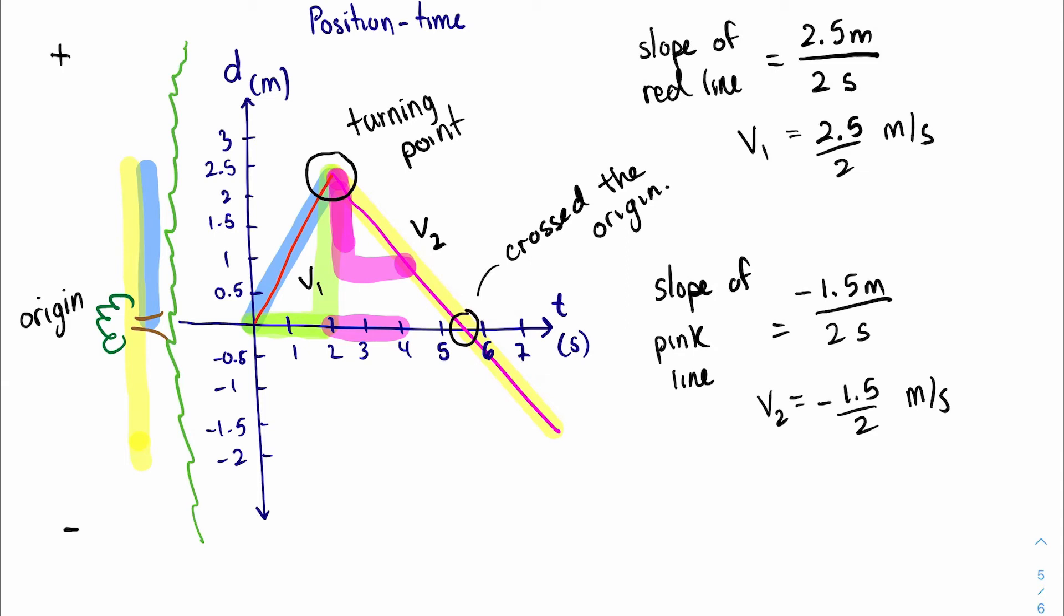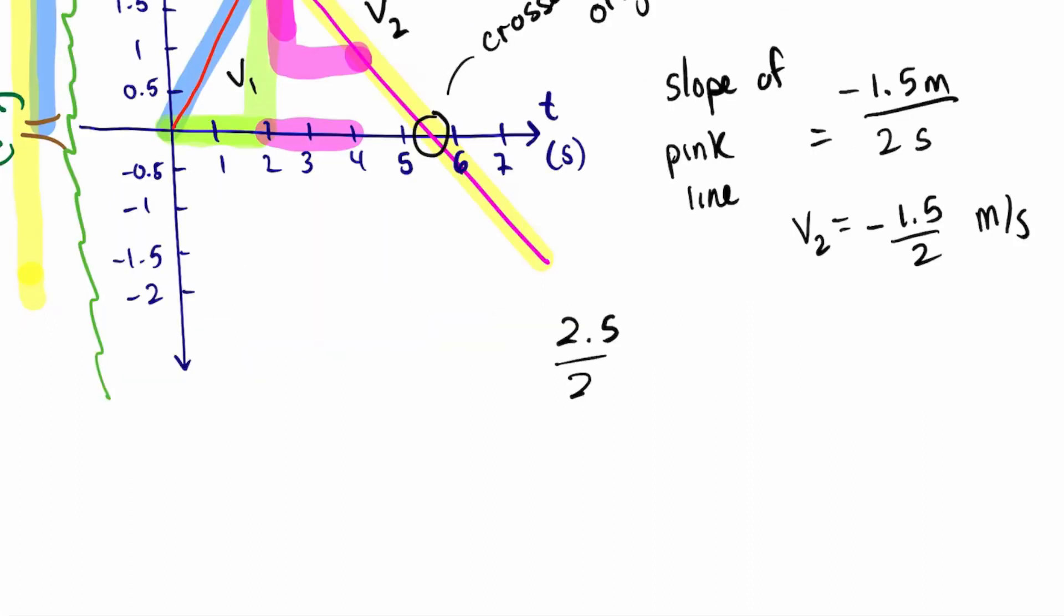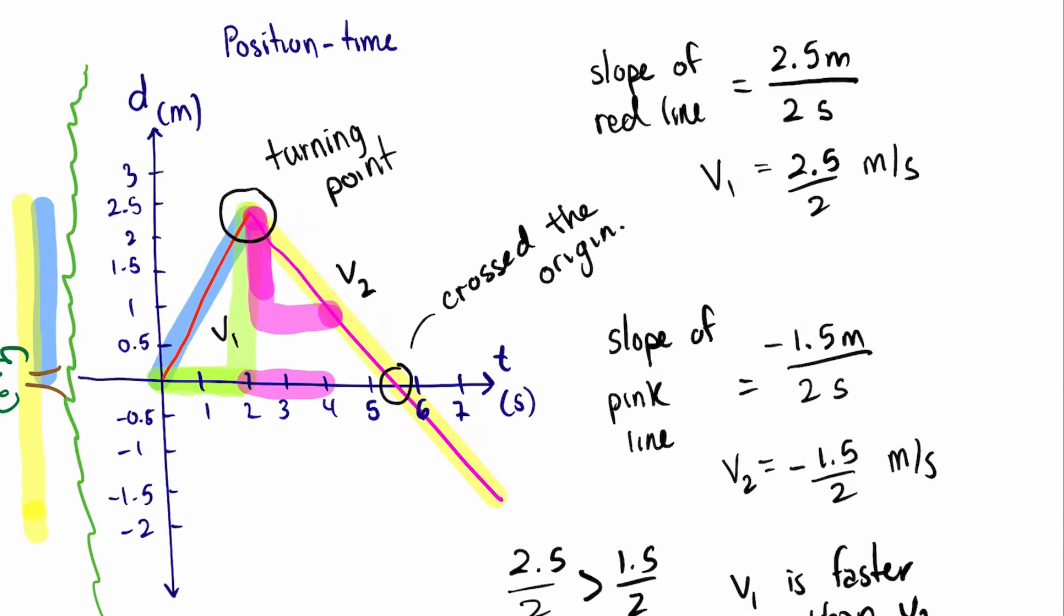And let's call this v2. So now we have a situation where we have comparison: 2.5 over 2 and 1.5 over 2. 2.5 over 2 is greater than 1.5 over 2. So what does this mean? v1 is greater than v2, so v1 is faster than v2.